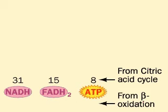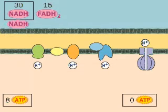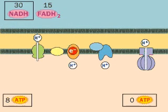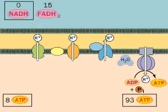For the payoff, let's see what happens when these electron carriers reach the electron transport chain and oxidative phosphorylation. Each NADH entering the chain produces about three ATPs — we have rounded the numbers off for simplicity — for a total of approximately 93 ATPs from 31 NADHs.